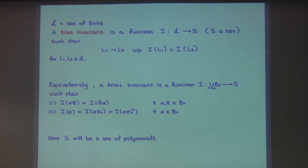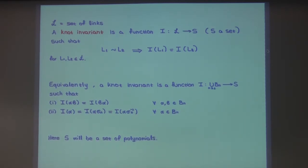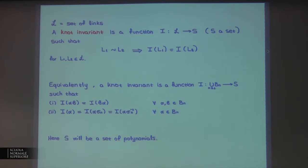A question arises: does it need to match on BN and BN+1? The answer is that it's a disjoint union, because the identity in B2, when closed, gives two circles — not the same as one circle. So you would like it to separate these two. In this talk, S will be a set of polynomials.